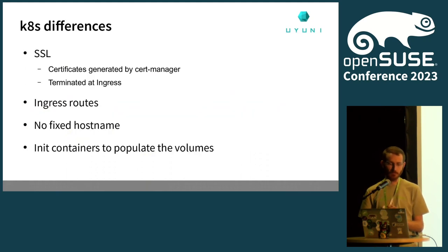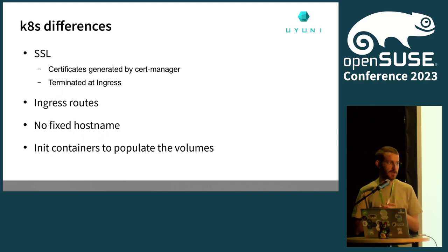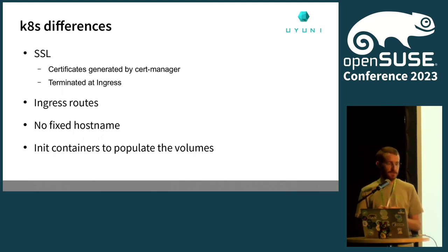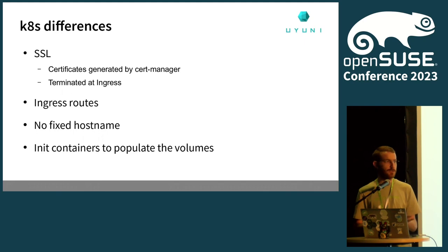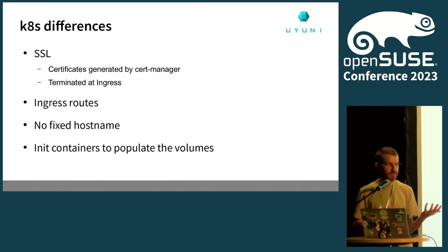There are quite a few differences between Podman and Kubernetes. For Podman, you can think of it just like a VM running in a container. In Kubernetes, I disabled SSL certificate generation inside the container because Kubernetes has great ways to generate certificates — using cert-manager it's totally automated, you can use it with Let's Encrypt for instance, it generates and renews certificates automatically. So certificates are generated outside the container, which was not the case before, and setup scripts had to be adapted accordingly.